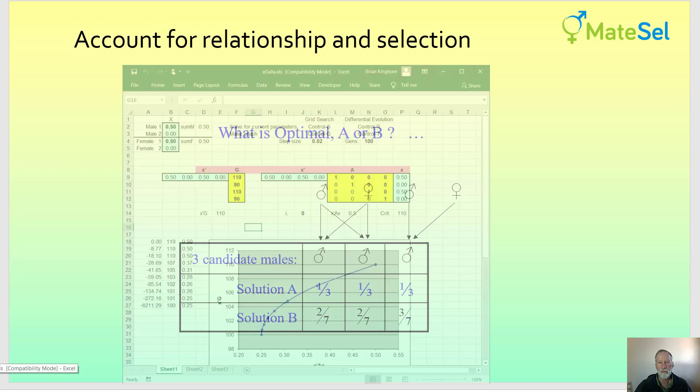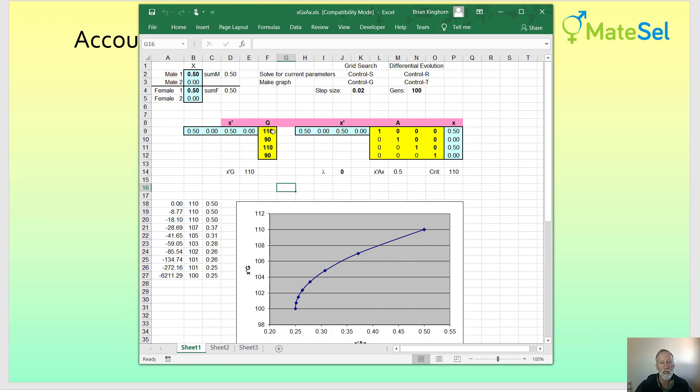So now I'm going to use a simple example to give you a better feel for x'G and x'Ax, which is parental co-ancestry. In this case, I'm not dividing it by 2, so it's not quite parental co-ancestry, just for simplicity.